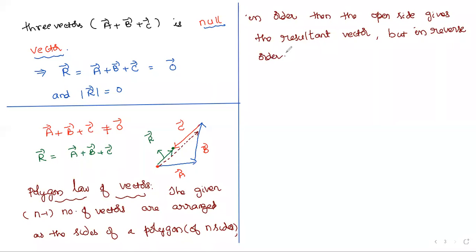Do you have any doubt about the statement of the polygon law of vectors? Do you need a diagram? No need — the statement is clear. I will show the diagram for it in the next class.